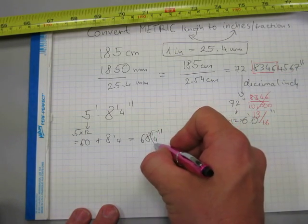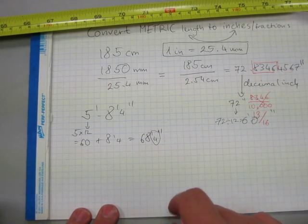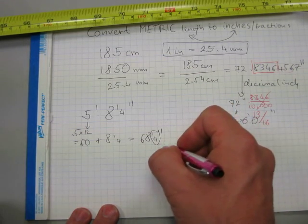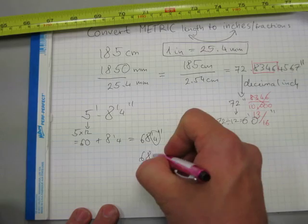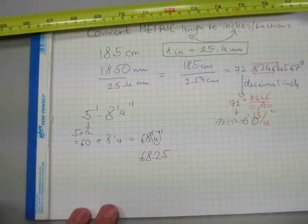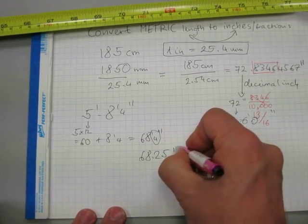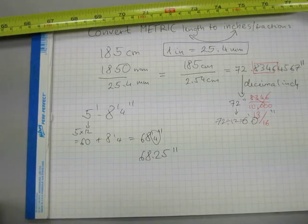That's 68 and a quarter. After this quarter we need to make a decimal. We know that a quarter inch is 0.25. So that's the end of that story. We have an inch decimal, 68.25.